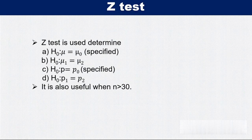Z-test is also used to determine if proportion of a population is equal to specified proportion or proportion of two populations are equal. These all are applicable when the sample size is large, that is n greater than 30.